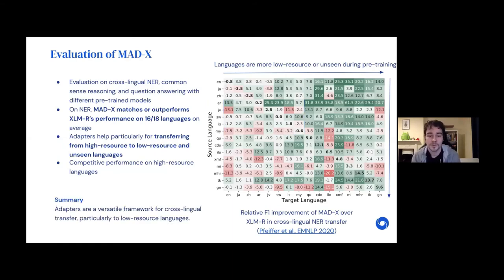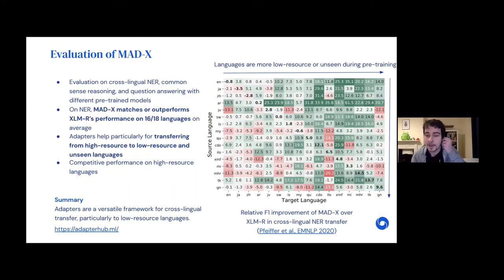One of the most interesting observations is that the model performs particularly well in the top-right quadrant, which corresponds to transferring from high-resource to low-resource languages — arguably the most realistic setting in practice. But also in the top-left quadrant, we can generally see competitive performance on high-resource languages when transferring between high-resource languages using the additional adapter parameters. Adapters can be quite a useful paradigm to adapt an existing model that already encodes knowledge for many languages specifically to your target language of interest, particularly if your language does not have a lot of labeled or unlabeled data. As part of this work, we also released AdapterHub, a general framework for training adapters in any setting, where you can download adapters and plug them into your own Hugging Face Transformer models in practice.